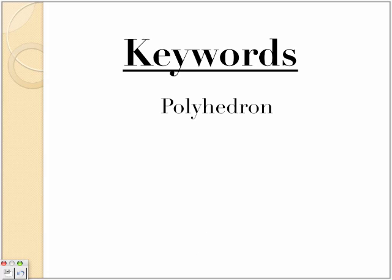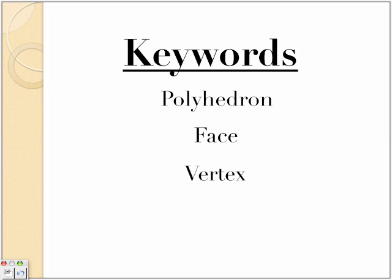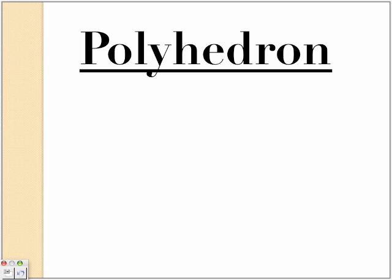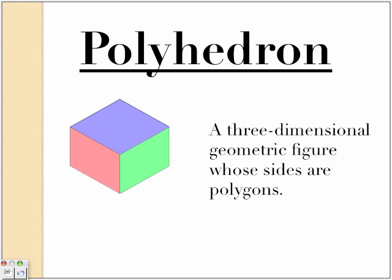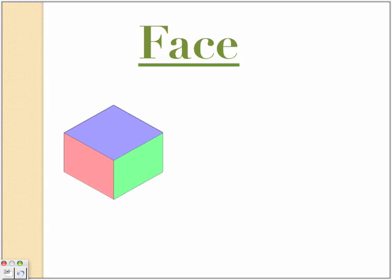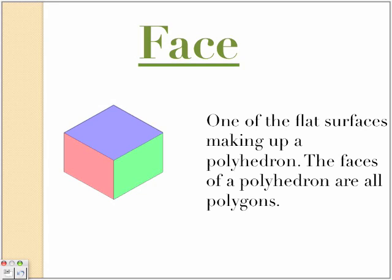Some keywords are polyhedron, base, vertex, and edge. So, polyhedron: a three-dimensional geometric figure whose sides are polygons. Here's the base, also known as side, right here, and here, and here. Face: one of the flat surfaces making up a polyhedron. The faces of a polyhedron are all polygons. So here's the face, this thing, the squares.